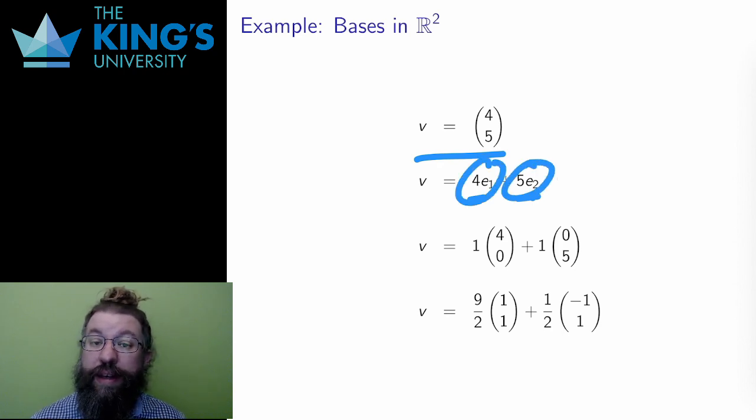However, for any other basis, I can apply that basis to describe (4, 5) as well. For the basis (4, 0) and (0, 5), v is 1 times (4, 0) plus 1 times (0, 5). This is describing the vector v in terms of the basis (4, 0) and (0, 5).